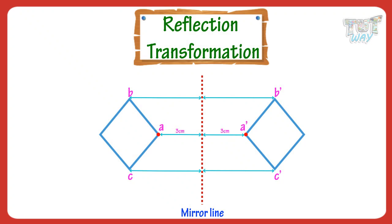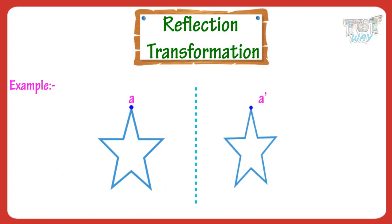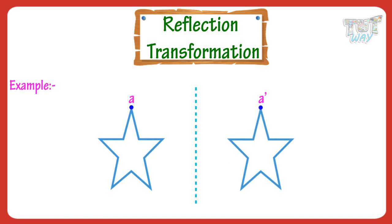Let's have a look at an example. A is the point on the actual image and A dash is the point on the reflected image. Both the points are equidistant from the mirror line.